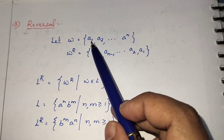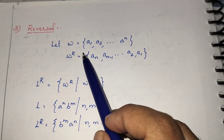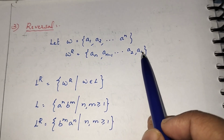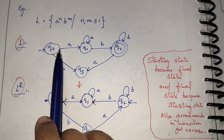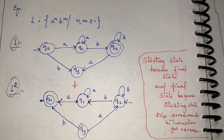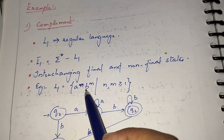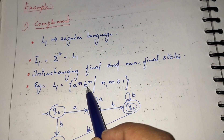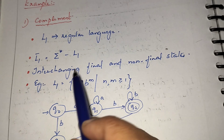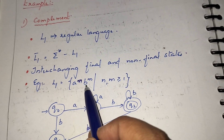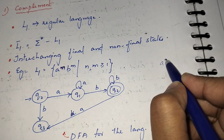Now, reversal of a language: if w equals a1 a2 ... an, then its reverse is an a(n-1) ... a1, written as w raised to R. So if the DFA accepts a raised to n followed by b raised to m — and I should clarify, earlier I wrote a raised to m b raised to m, meaning equal numbers of A's and B's, which is not a regular language.